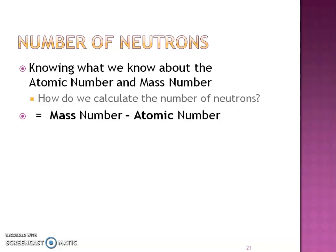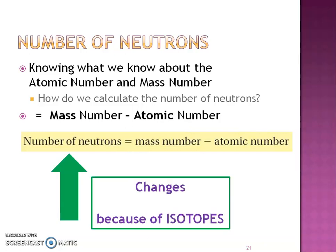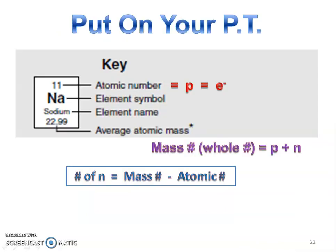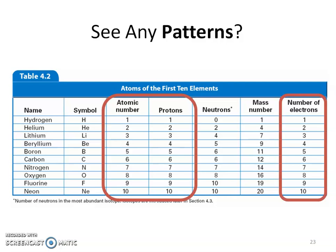The mass number — that whole number — minus the atomic number gives us the number of neutrons, and this is where that calculator comes in handy. The number of neutrons will change because of isotopes. Add to your periodic table cheat sheet: number of neutrons equals mass number minus atomic number. If you look at the first 10 elements, you'll see the pattern — the atomic number equals the number of protons, which also equals the number of electrons in a neutral atom. All three of those numbers equal each other.